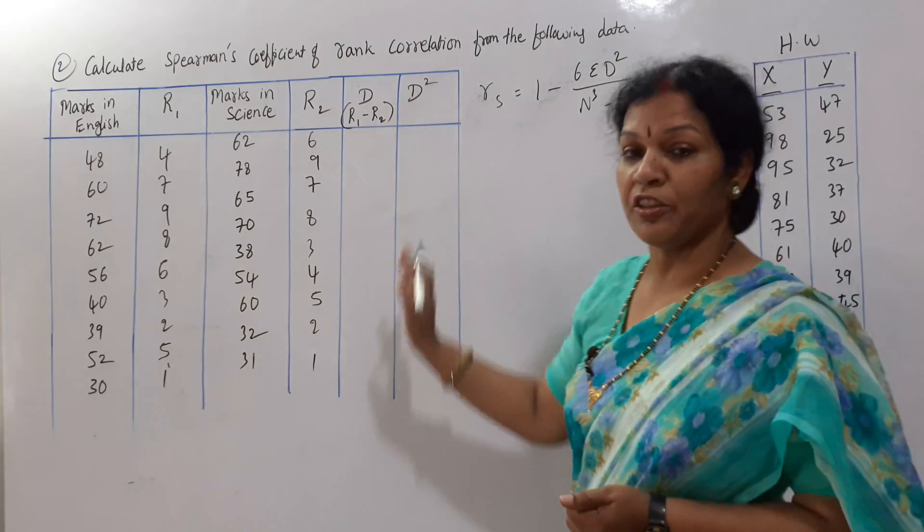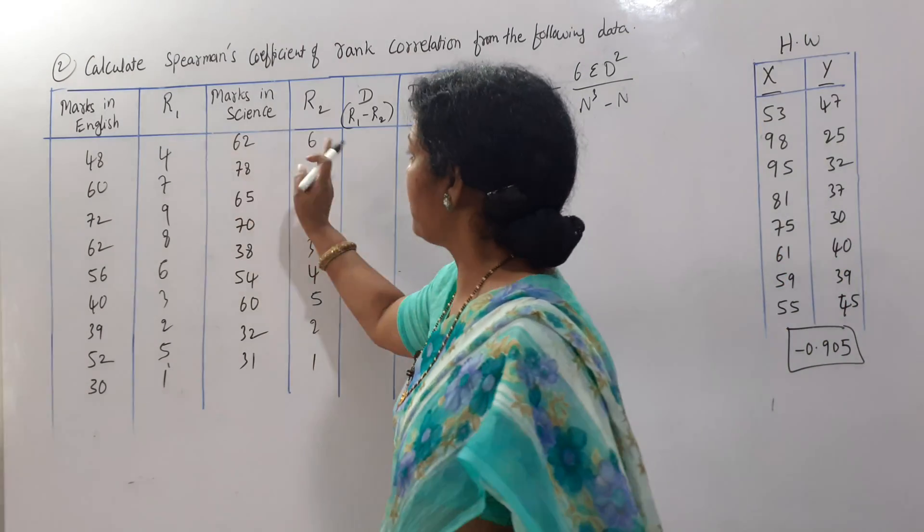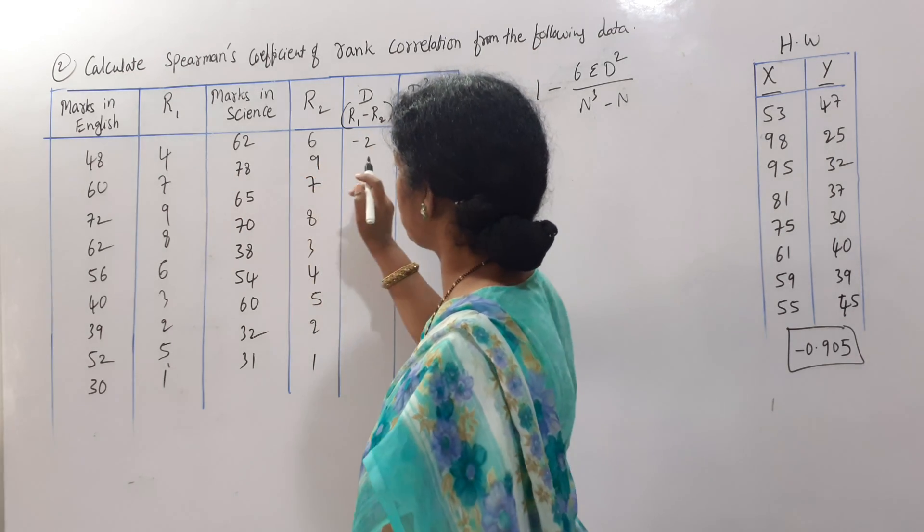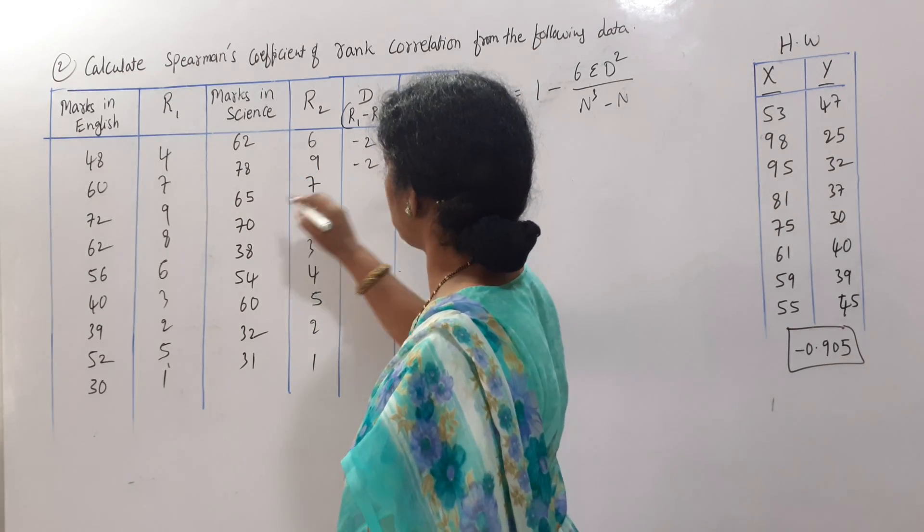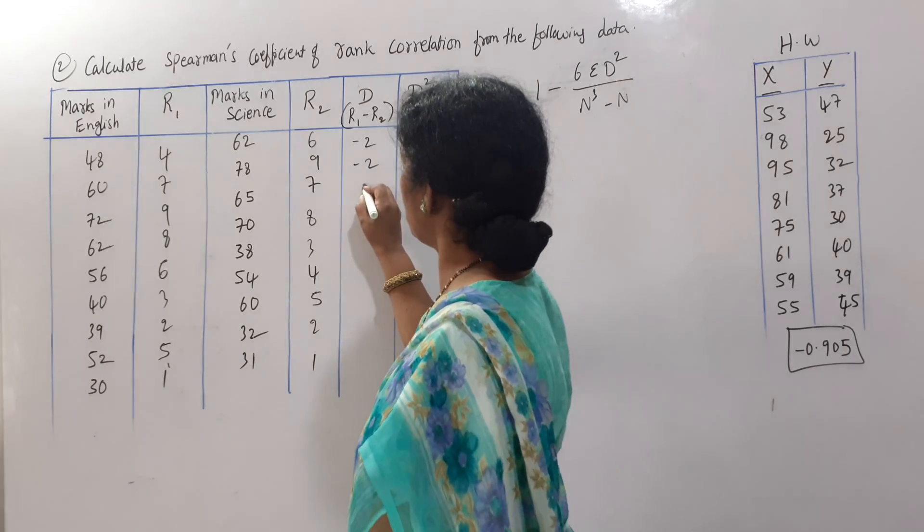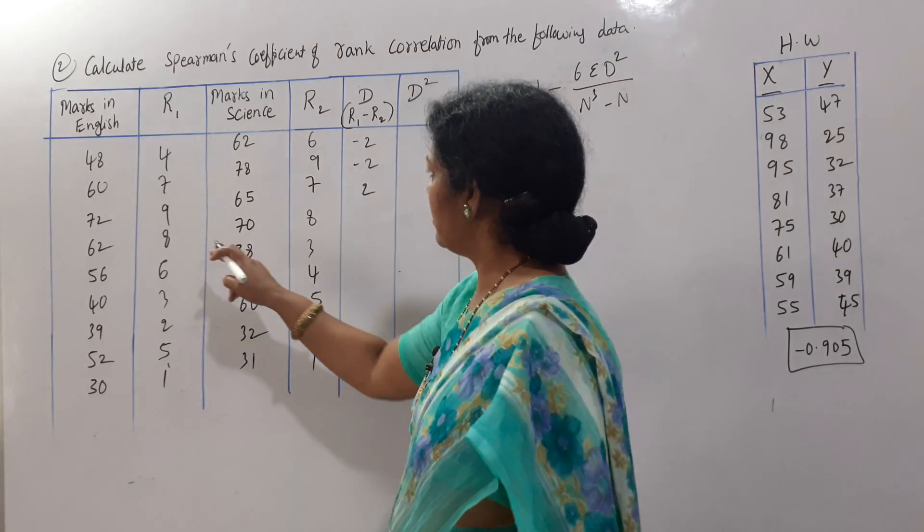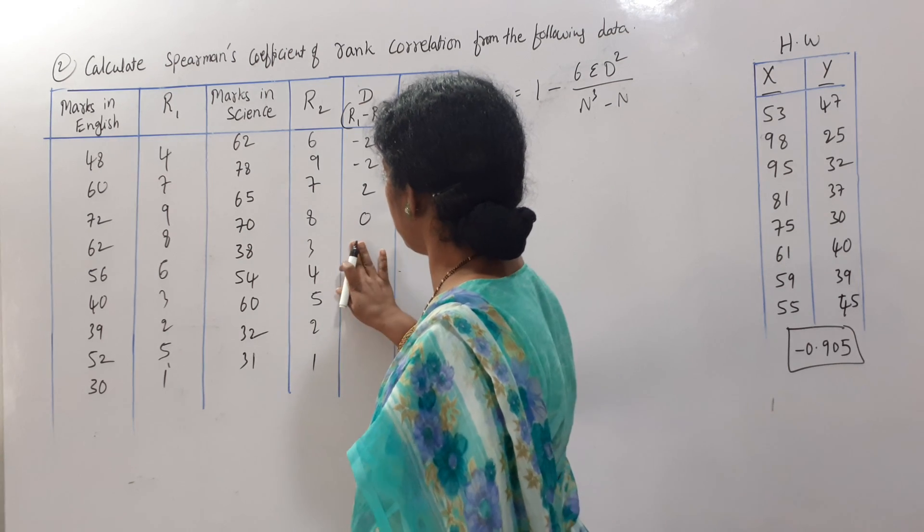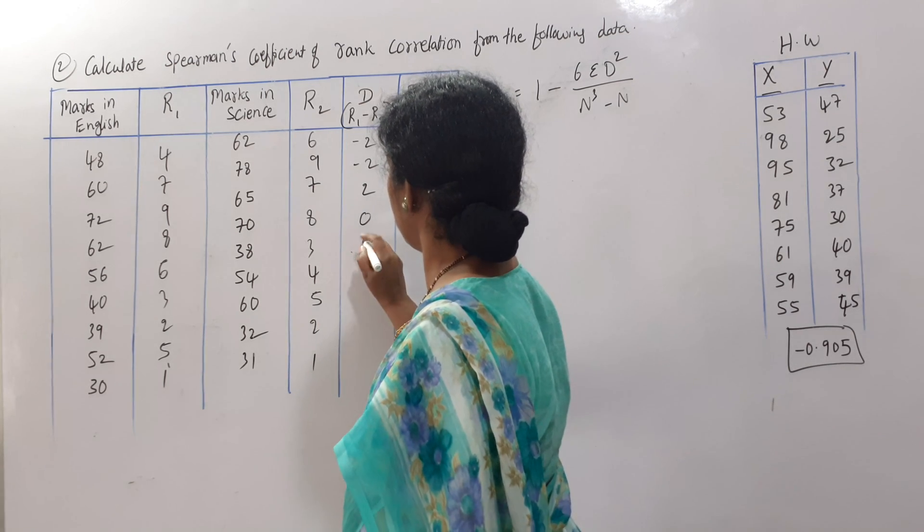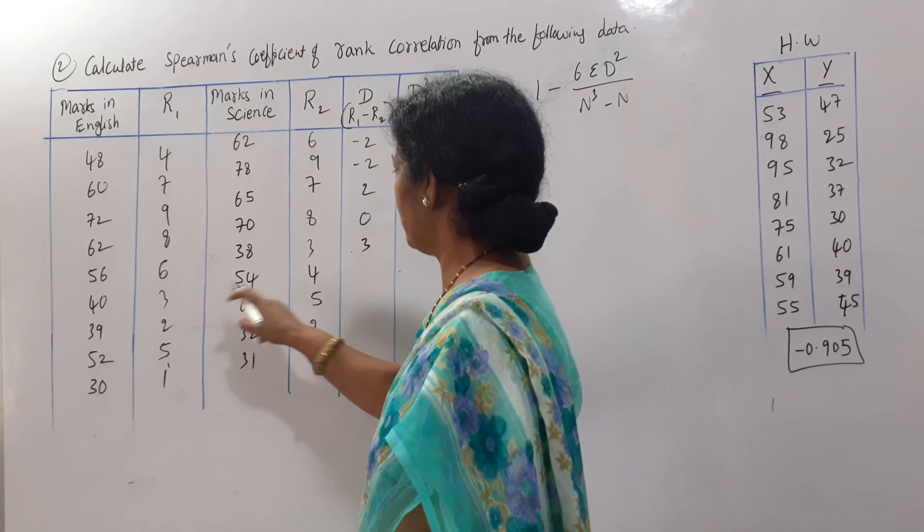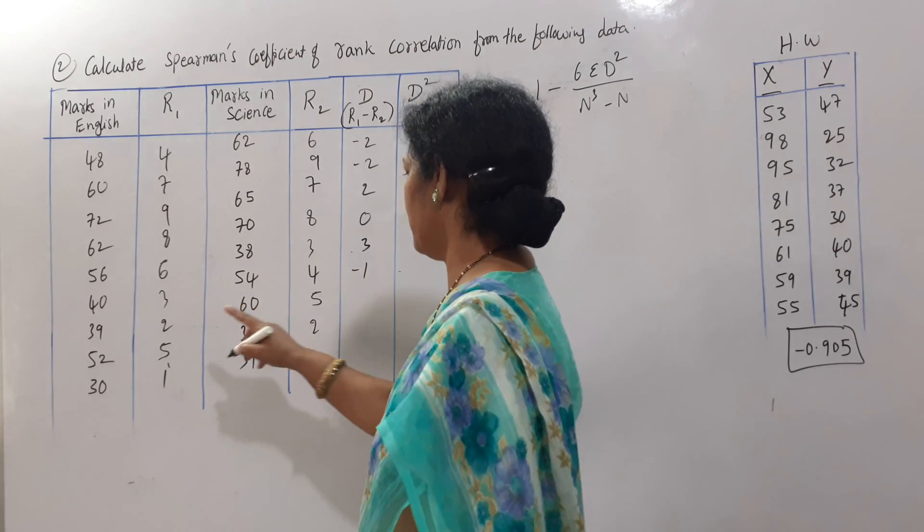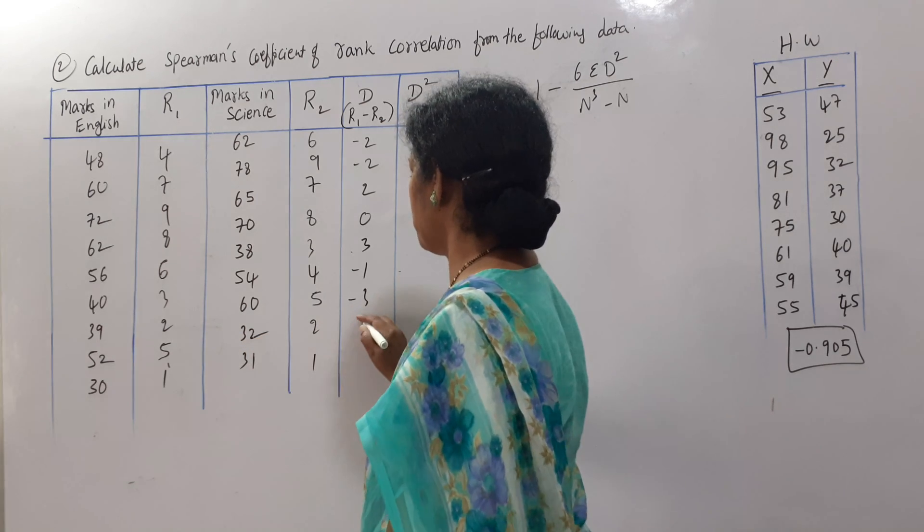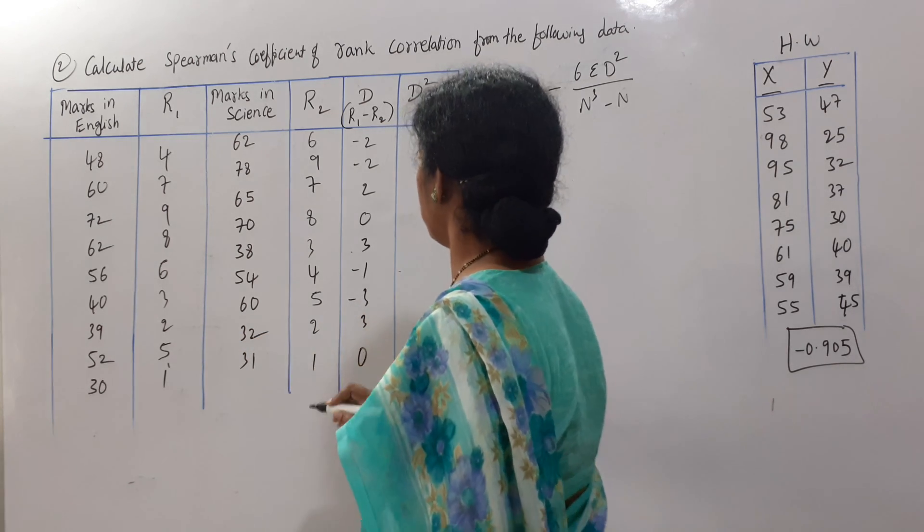Now, go for calculation of D. D means R1 minus R2, 4 minus 6 minus 2, 7 minus 9, minus 2, 9 minus 7, 2, 8 minus 8, 0, 6 minus 3, plus 3, 3 minus 4, minus 1, 2 minus 5, minus 3, 5 minus 2, 3, 1 minus 1, 0.